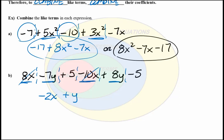Then, I do have two constants left. I have a positive 5 and a negative 5. And when I combine those together, I just get 0. So nothing's added. So this expression, we can combine like terms to get negative 2x plus y.